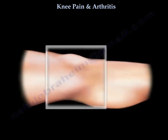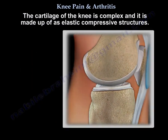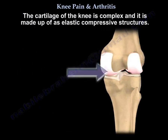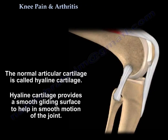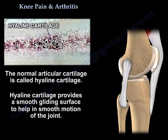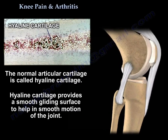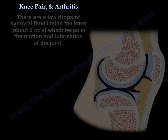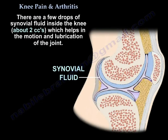Knee pain and arthritis. The cartilage of the knee is complex and is made up of elastic compressive structures. The normal articular cartilage is called hyaline cartilage, which provides a smooth gliding surface to help in smooth motion of the joint. There are a few drops of synovial fluid inside the knee, about 2 cc's, which helps in the motion and lubrication of the joint.